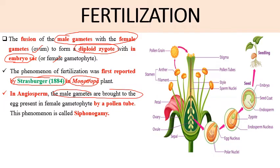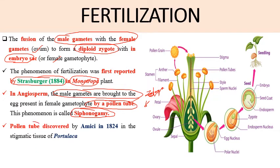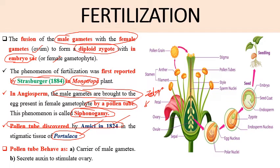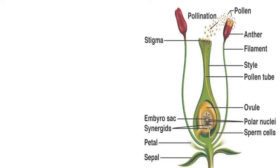In angiosperms, the male gametes are brought to the egg present in the female gamete by the pollen tube. This phenomenon is known as siphonogamy. When the male gametes move with the help of flagella towards the egg, that phenomenon is known as zoogamy, which occurs in some lower plants or in cycads. The pollen tube was discovered by MEC in 1824 in the stigmatic tissue of Portulaca. The pollen tube functions as a carrier of male gametes and creates oxygen to stimulate the ovary.